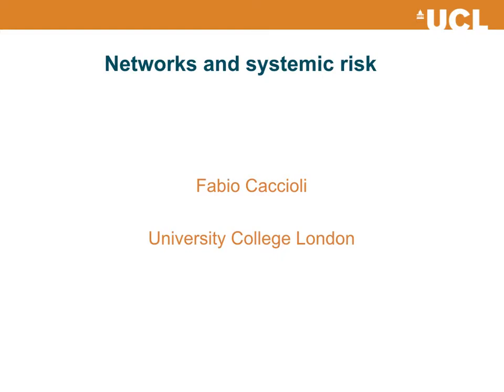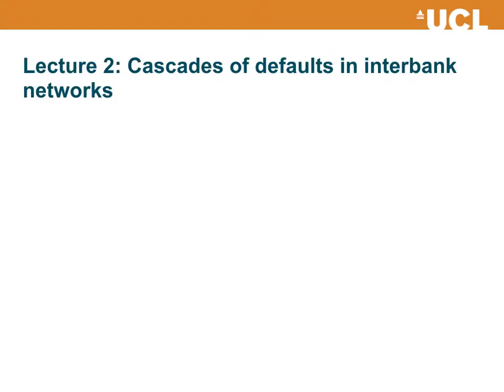We have seen in the first lecture the model of global cascades introduced by Duncan Watts. In this lecture we will see how this model can be used to understand financial contagion in interbank networks.